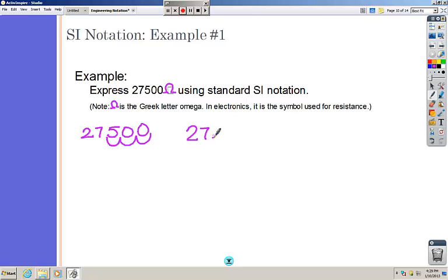So 27,500 ohms would be 27.5 times 10 to the 3rd ohms. When we look at that, 27.5 times 10 to the 3rd ohms, that's what? Well, it'd be kilo in our prefixes we just went over. So it would be 27.5 kilo ohms.